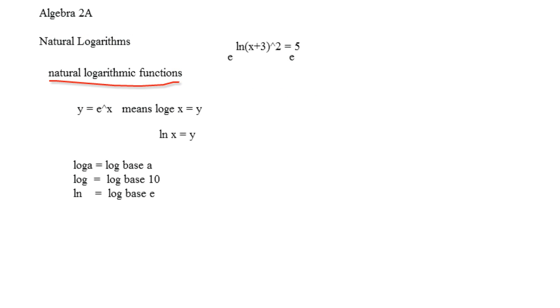What happens when you do this is that these two cancel out, and this comes down in front, so what we're left with, and this is a different type of method than what you're used to, (x plus 3) squared equals e to the fifth, and that's an actual number.